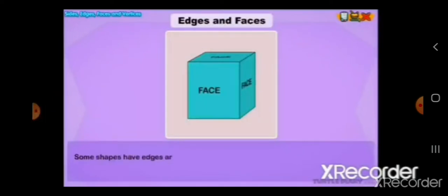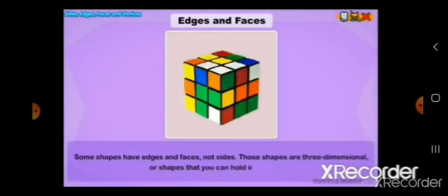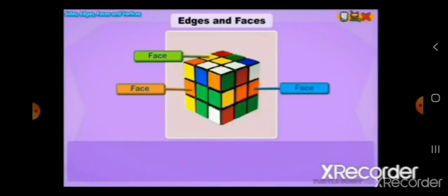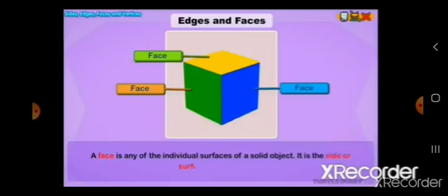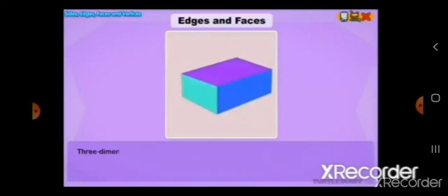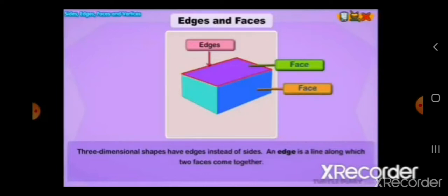So these 3 things we are going to learn: edges and faces. Now what do you mean by edges and faces? Some shapes have edges and faces not sides. Those shapes are 3 dimensional. The one that you can hold in your hand. A face is any of the surface of a solid object. It is the side or surface that you can touch. In a 3D object you can touch them. 3 dimensional shapes have edges instead of sides. An edge is a line along which two faces come together. As you can see in the picture.